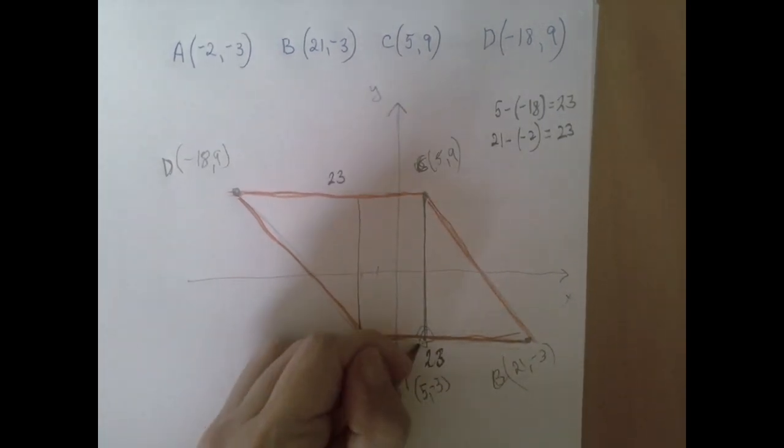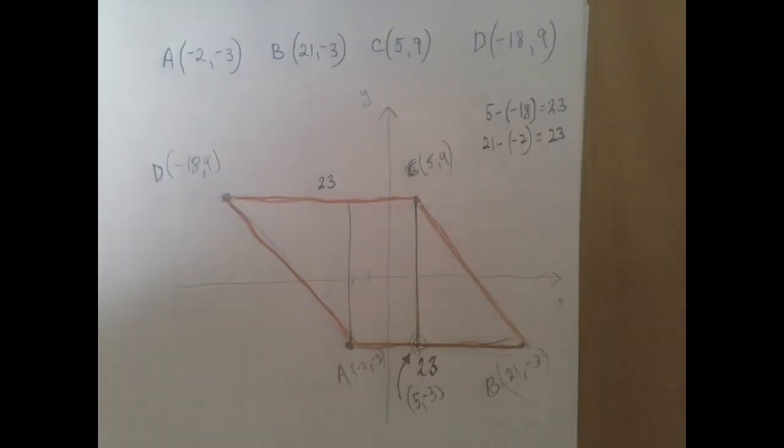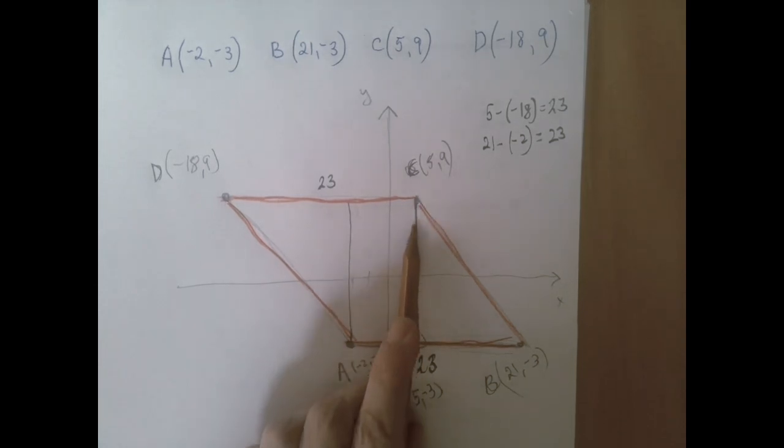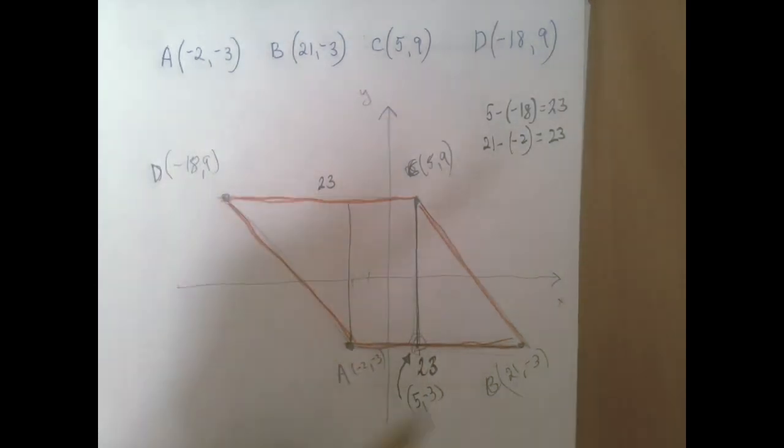So this point here is 5, negative 3. And then this point here is 5, 9. So this is a vertical line. The distance is going to be the same as the difference between the two coordinates. 9 minus negative 3.